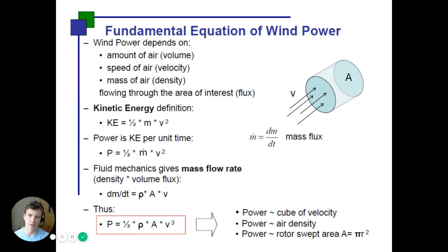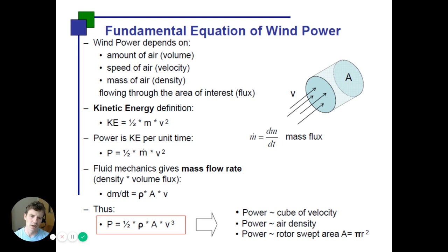Power is kinetic energy per unit time, so we divide by a time dimension. Power equals one-half times m-dot times velocity squared, where m-dot is the change in mass versus change in time — the mass flux.